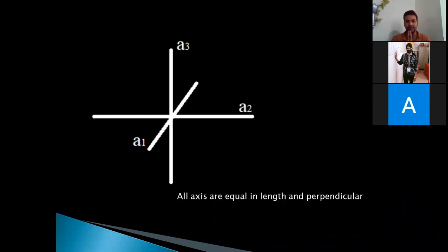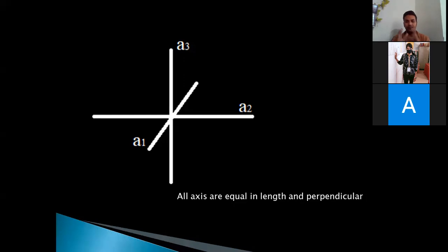This is the simplest axial diagram where you can see three crystallographic axes. Consider that you are holding the crystal in front of you. The axis running from front to back will be referred to as A1. The axis running from right to left will be called A2. And the axis running from top to bottom is termed A3. Remember that these axes are named on the basis of your frame of reference — your position will decide which axis is A1, A2, and A3.